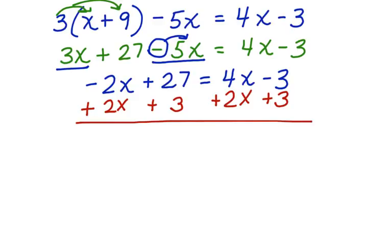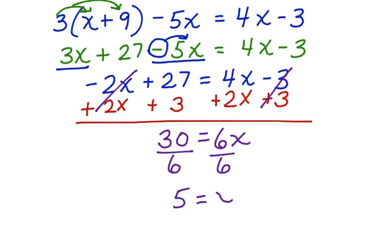Now, watch what happens. Negative 2x plus 2x cancels. 27 plus 3 is 30 equals 4x plus 2x, which is 6x. Negative 3, positive 3 cancels. Now, I have a one-step equation. I can divide both sides by 6, and x is equal to 5. My work is finished and complete.